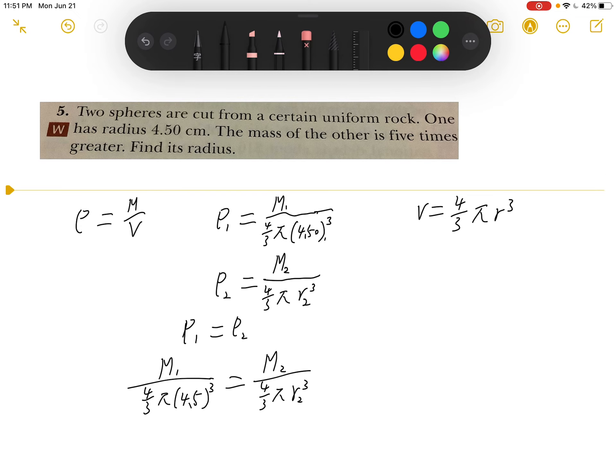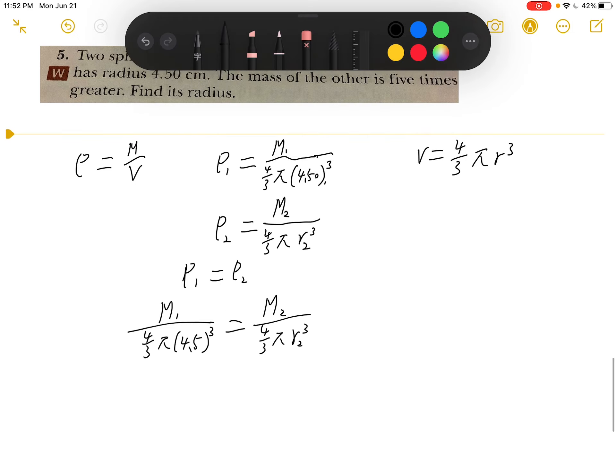And it says that the mass of the other is 5 times greater, so that means M2 equals 5 M1.